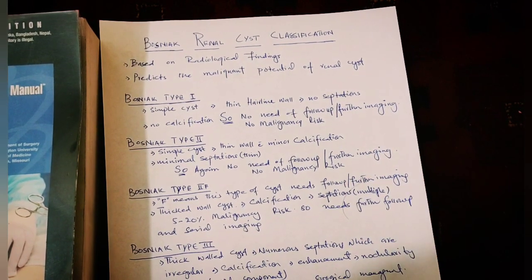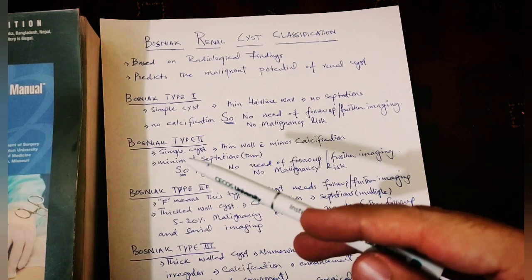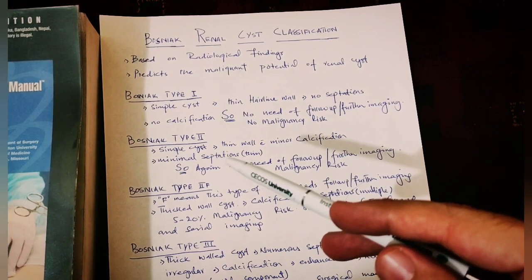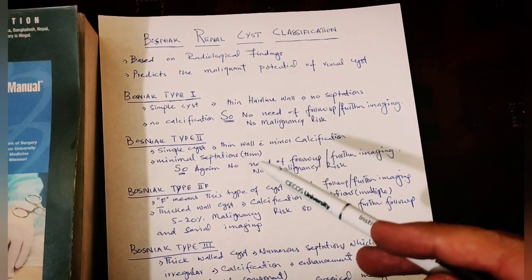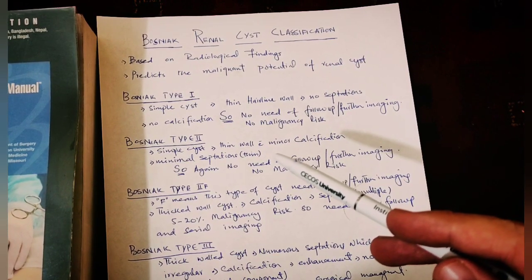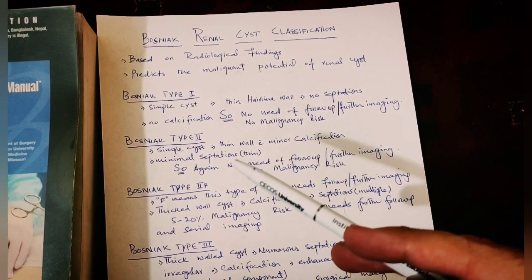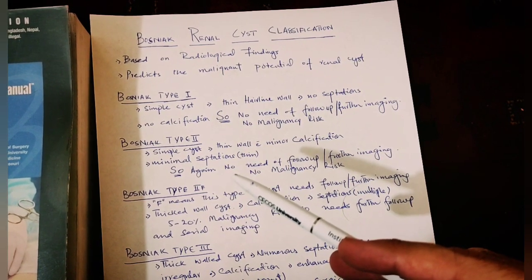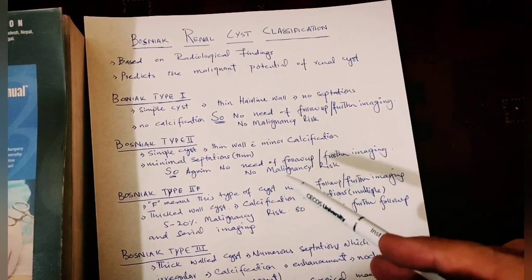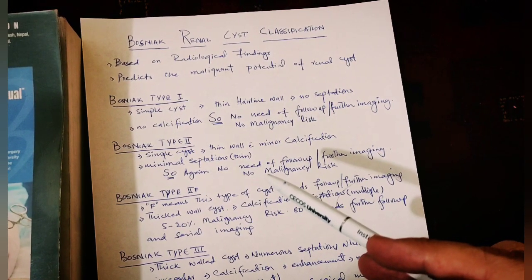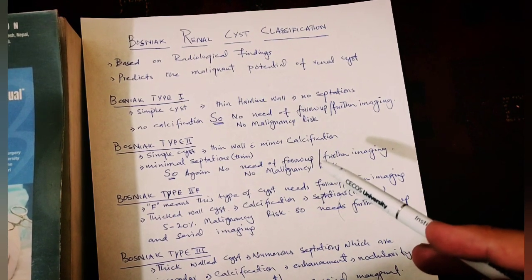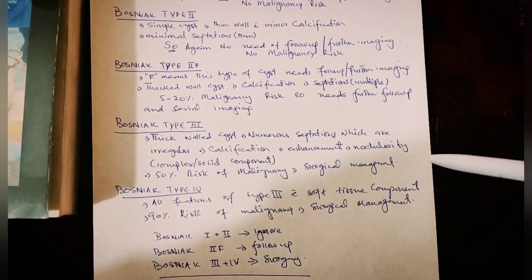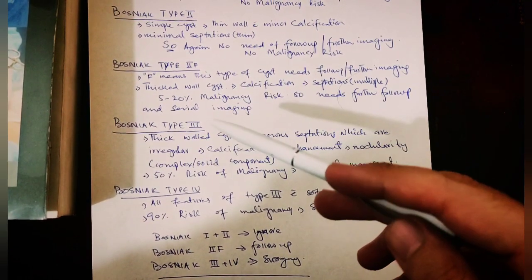Bosniak Type II renal cyst is again a simple renal cyst with thin wall and with minor calcification, and the septations are present but they are very thin and very minimal. So there is no risk of malignancy and again no need of any further follow-up or imaging.